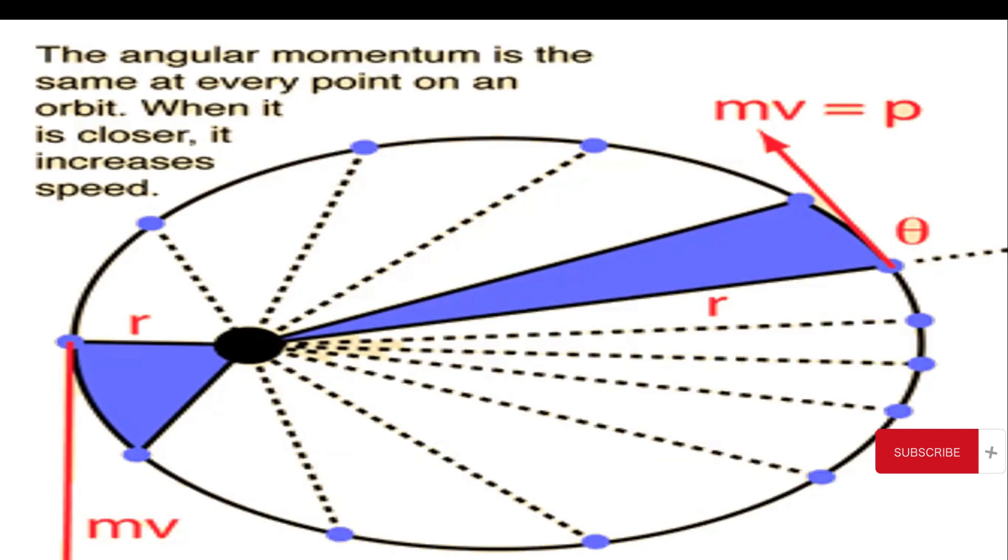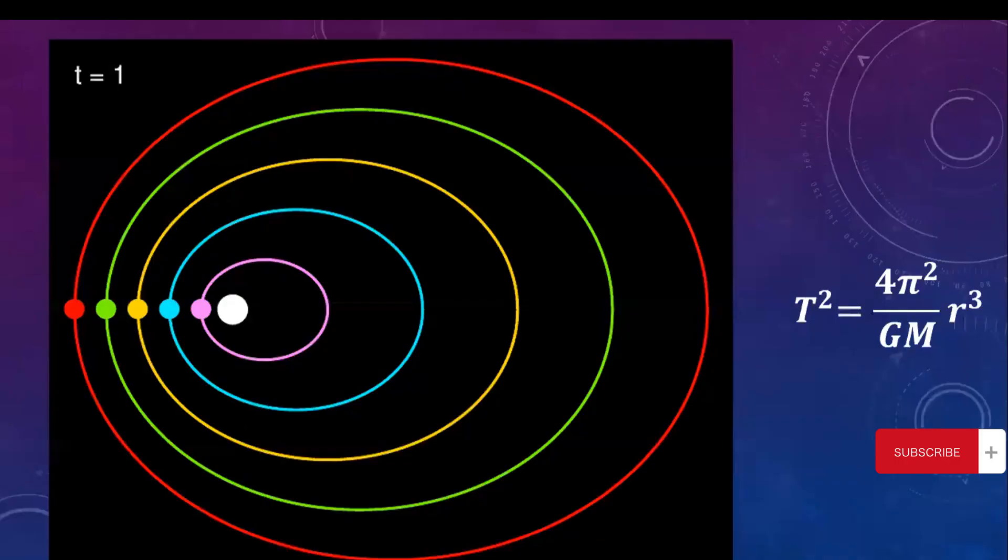When applied to celestial objects, let's imagine the earth orbiting around the sun. Because the angular momentum is conserved, the mass of the earth is unchanged. When earth is closer to the sun, it sweeps out equal area in equal intervals of time.